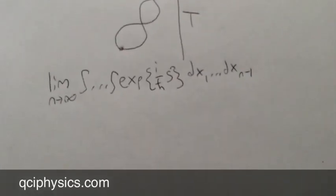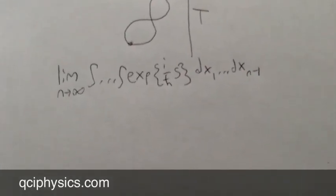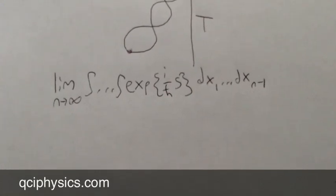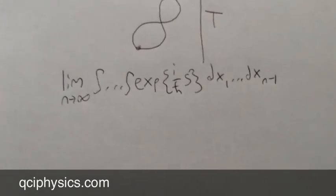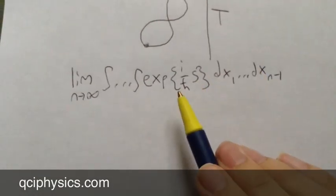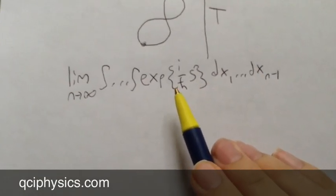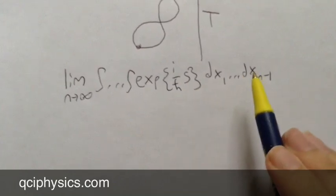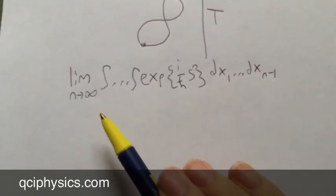x sub 1 through x sub n minus 1 are all the positions along our discrete or time-sliced path, skeletonized path so to speak, and this is our contribution formula. And we're integrating over all possible contributions, and then we're letting the number of time slices approach infinity.